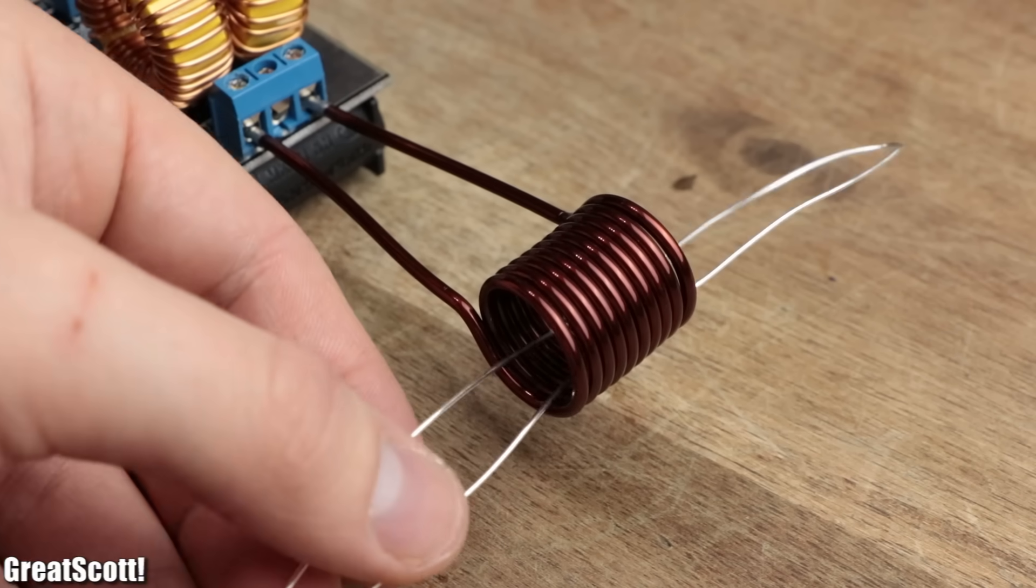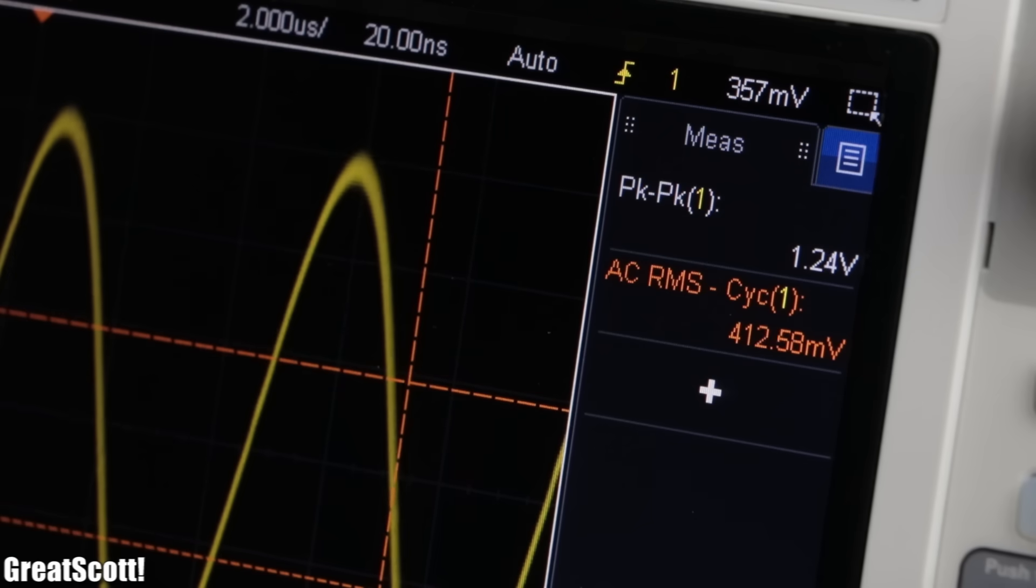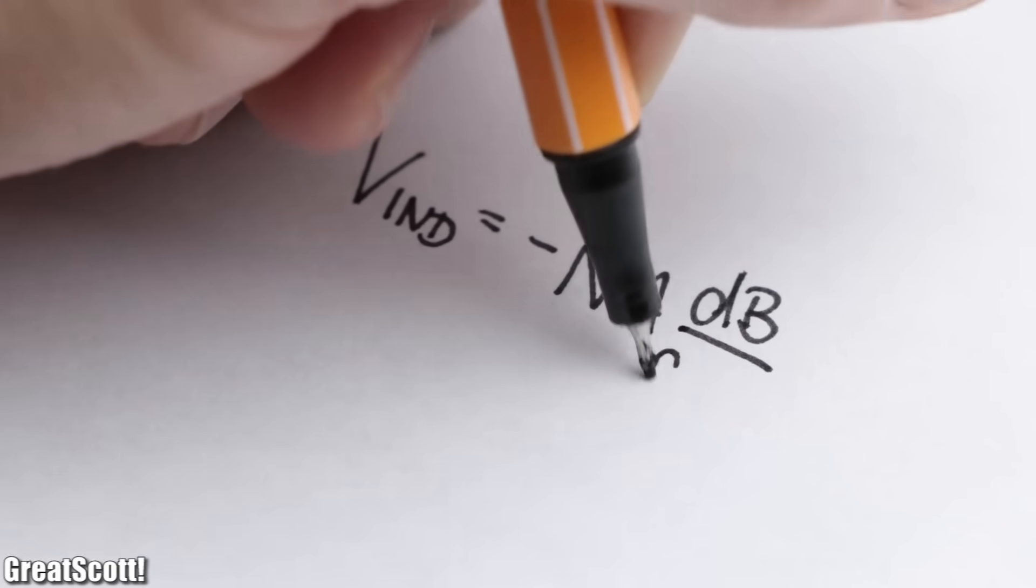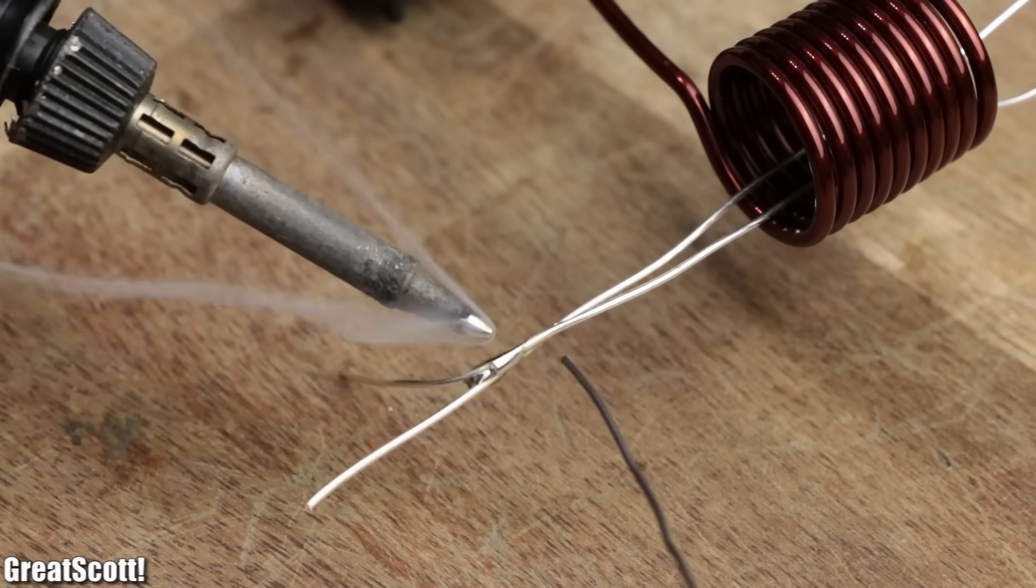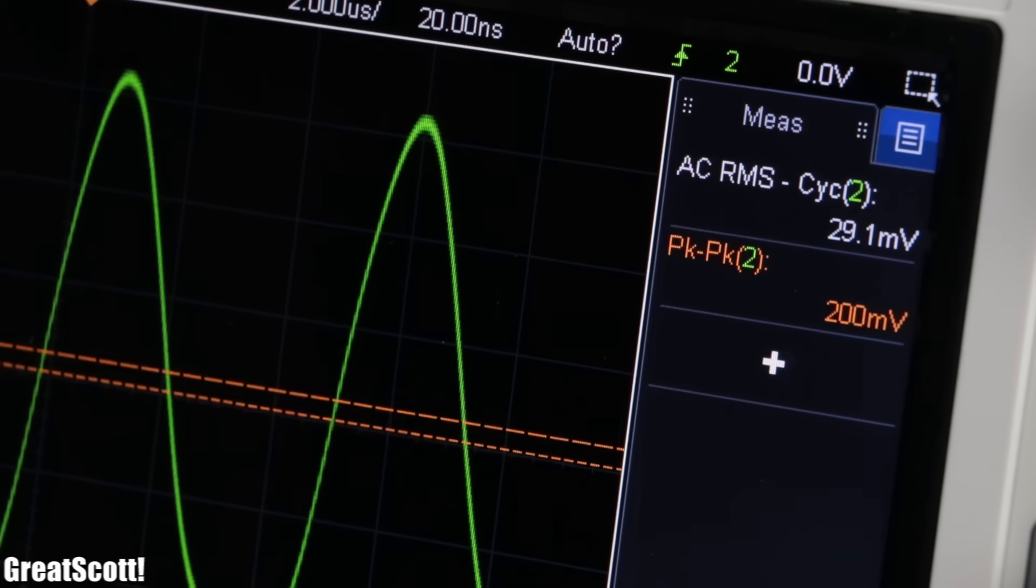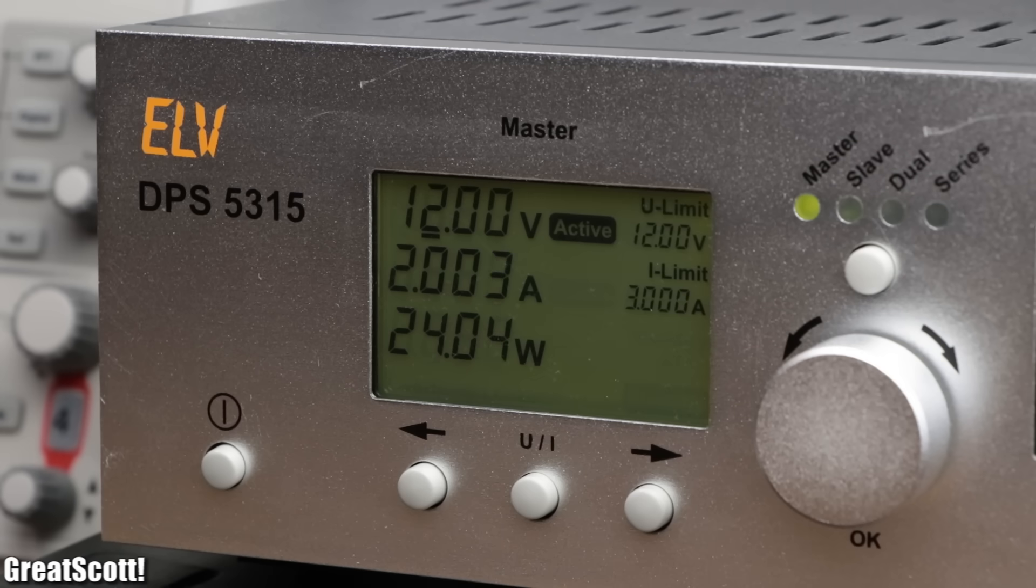we can measure a small voltage across it according to the law of electromagnetic induction. If we now close the loop, we basically created a short circuit and thus a current will flow through the inductor, which is also noticeable by the increase of the input current.